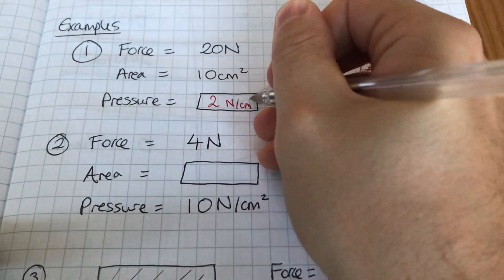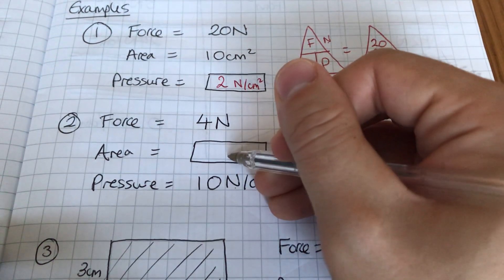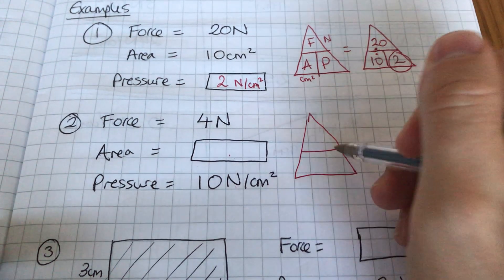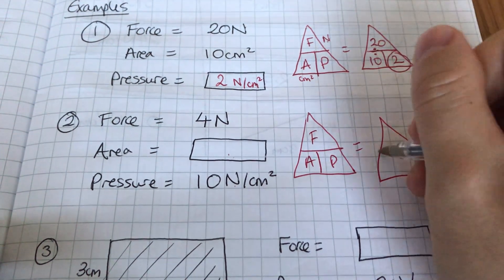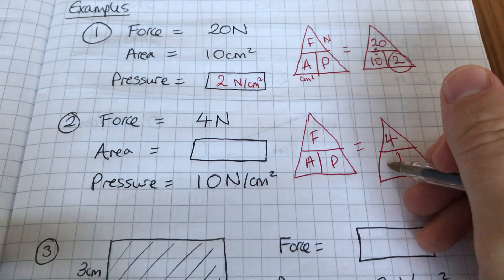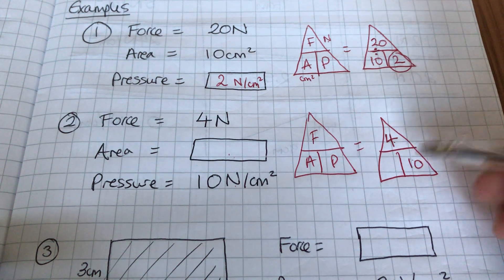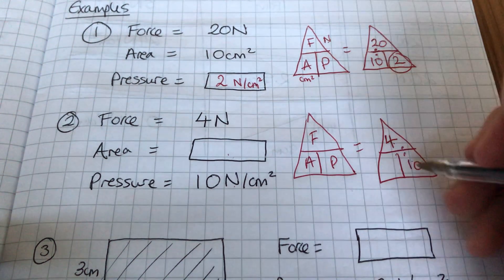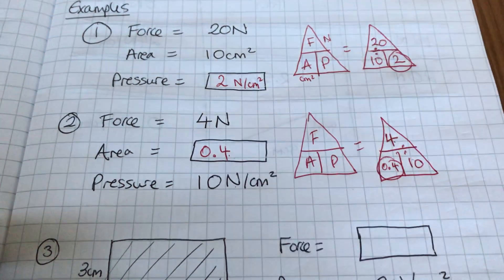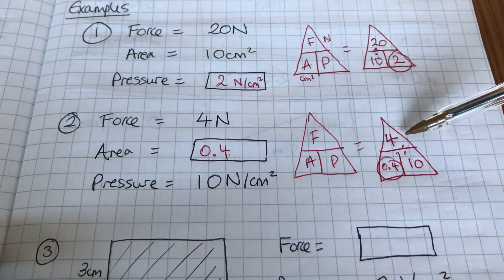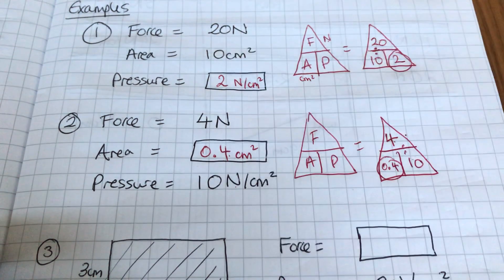Next one, force area pressure, but this time area is missing. I'm going to draw this force, area and pressure. And what does that turn into? Well my force is 4, my area I don't know so I'm going to leave it blank for now, and my pressure is 10. I've got this at the top, this at the bottom, so I'm going to divide. 4 divided by 10 is 0.4, so that's my answer. And if I've got newtons here and newtons per centimeter squared, the missing one is just centimeters squared on its own.